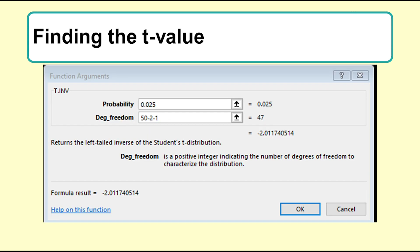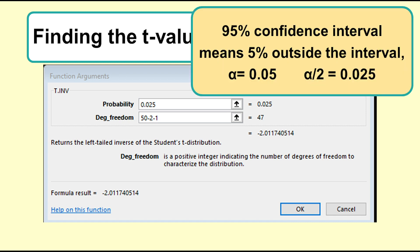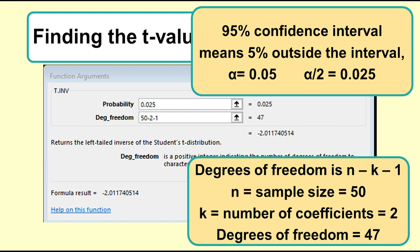The T value is not the T statistic given in a printout, but is found using a table or spreadsheet. We want to know the value of the T distribution which leaves 0.025 of the values to the left. The number of degrees of freedom is N minus K minus 1, or sample size minus number of coefficients minus 1, which in this case is 47. We get negative 2.012.